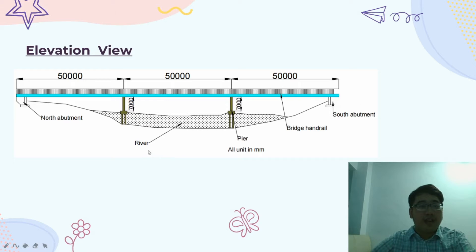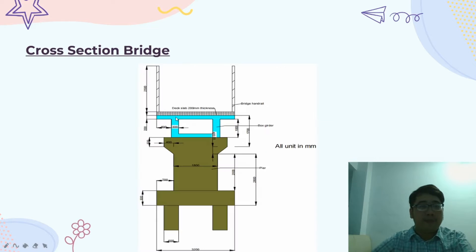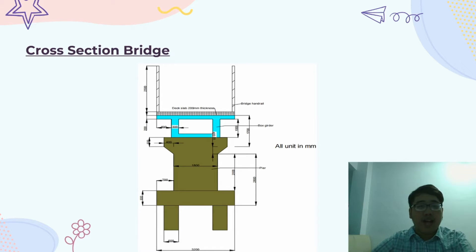In every 50 meters, we construct a pile. In this figure, we have 2 piles every 50 meters. As you can see, we are using a box girder as the bridge structure. The deck slab is 200mm thick.